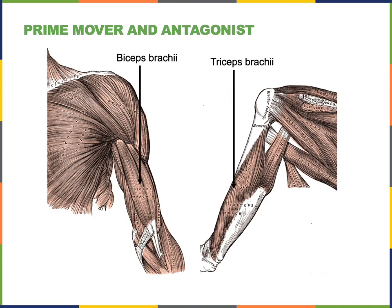The prime mover is the main muscle responsible for producing an action. For example, the biceps brachii is the prime mover for the action of flexion at the humeral-ulnar joint, commonly referred to as the elbow joint. The prime mover is also known as the agonist — agonist and prime mover are synonyms.